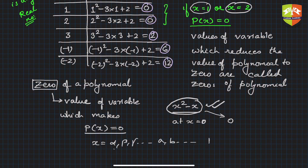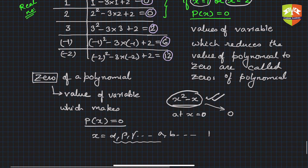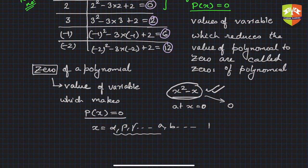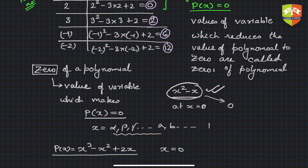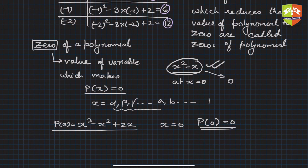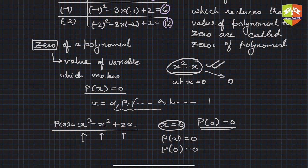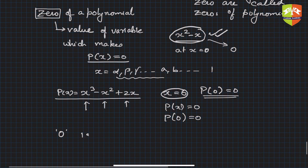The value of x that makes p(x) zero depends on the polynomial you are using. For example, take x cubed minus x squared plus 2x. If x equals zero, then p(0) is also zero — put zero everywhere and you get zero. So zero is a zero of p(x). There could be many more zeros as well.